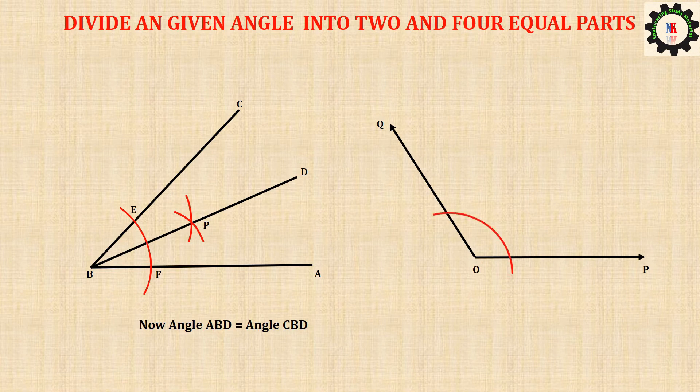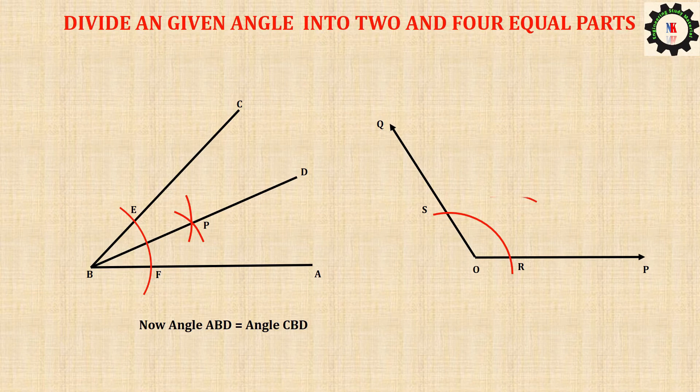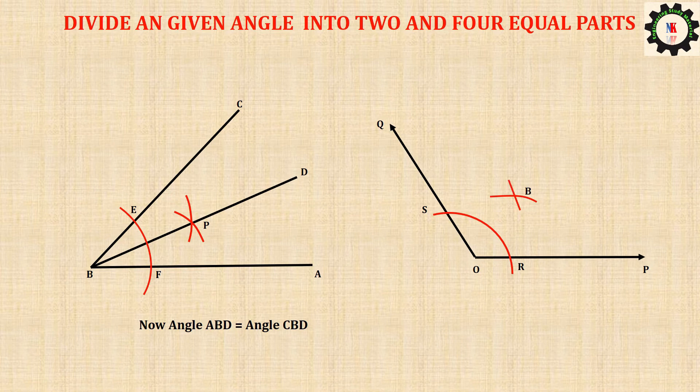With R as center and radius more than half of RS, draw an arc. Also with S as center and same radius, draw another arc to meet the previous arc at B.